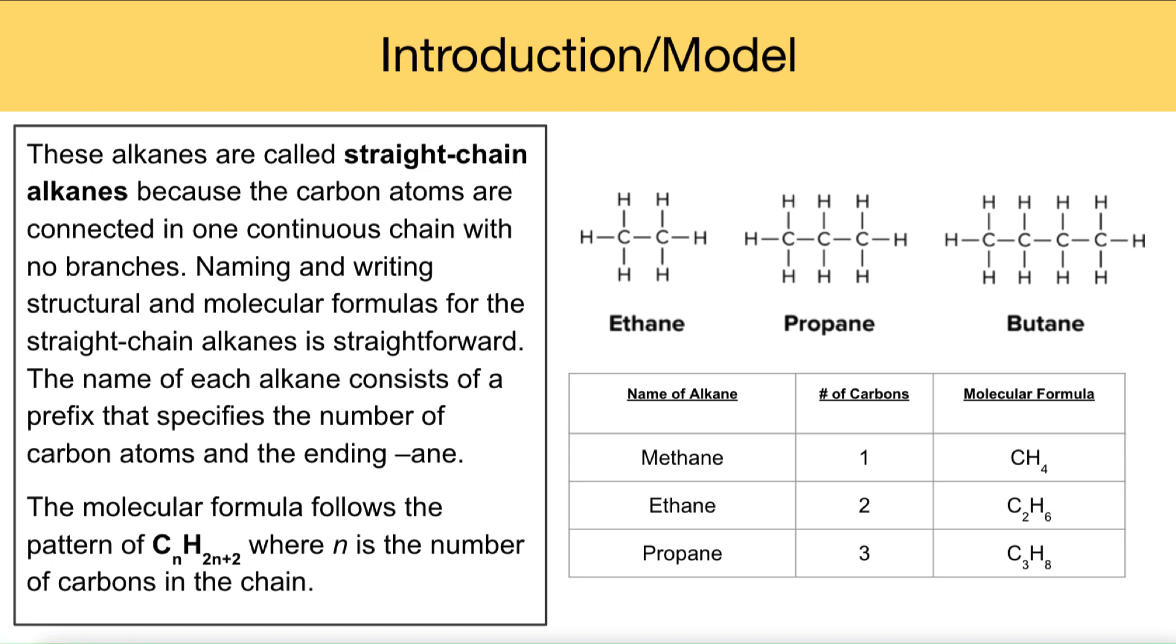Naming and writing structural and molecular formulas for the straight chain alkanes is straightforward. The name of each alkane consists of a prefix that specifies the number of carbon atoms and then the ending "-ane." So that's where methane, ethane, propane, butane come from.